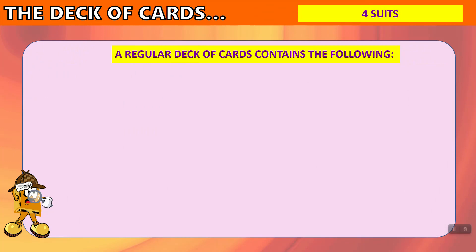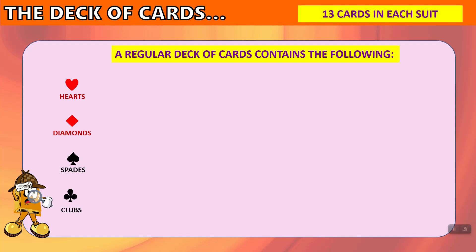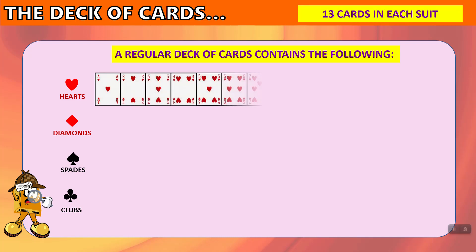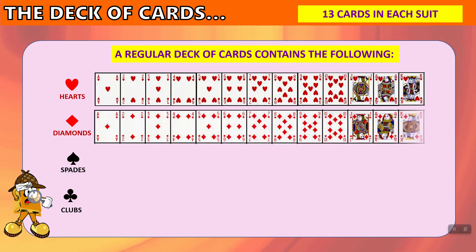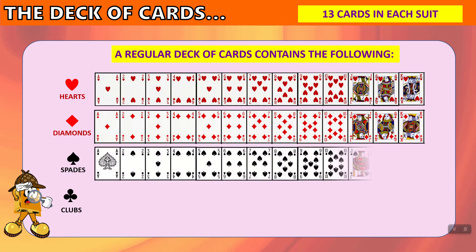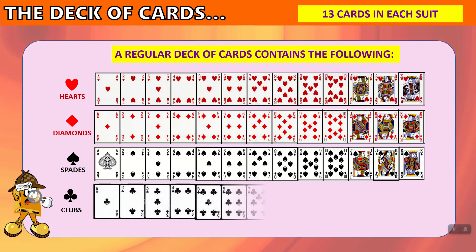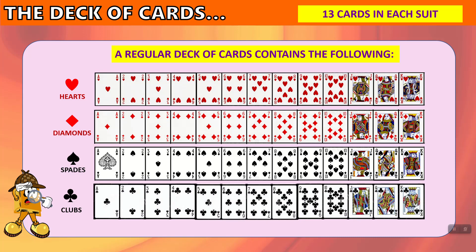Now let's take a look at a regular deck of cards. A regular deck contains 4 suits: hearts, diamonds, spades, and clubs. In each suit there are 13 cards, ranging from the ace, then 2 through 10, a jack (J), a queen (Q), and a king (K). So we have 13 hearts, 13 diamonds, 13 spades, and 13 clubs, each going from ace through 2 up to 10, then jack, queen, and king.